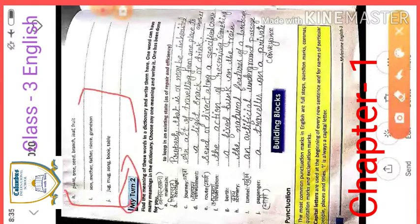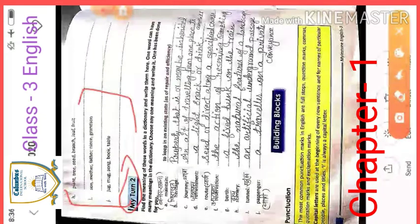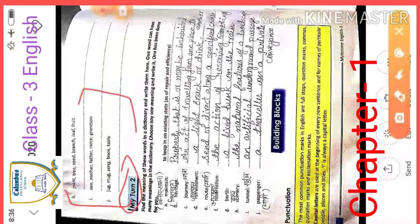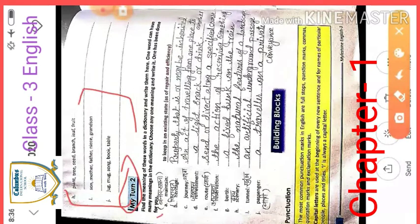Today we will move to the next exercise, which is about 'My Turn' — to find the meaning of these words in a dictionary and write them here. You have some words here and you have to find their meaning from a dictionary and write them down. One word can have many meanings in the dictionary, but you have to choose only one meaning for each word.